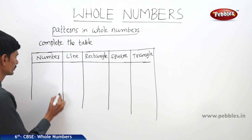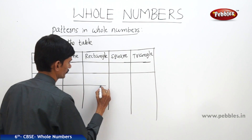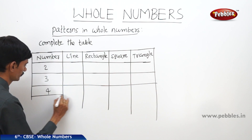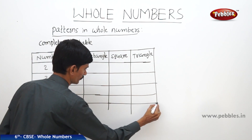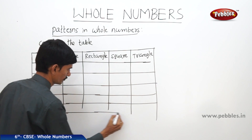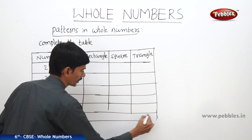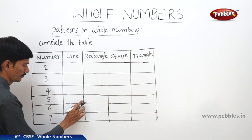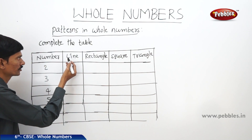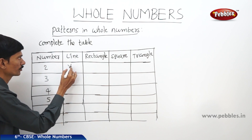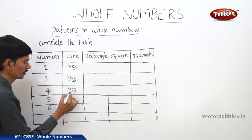Here we take different numbers such as 2, 3, 4, 5, 6, 7, and so on. We can take any number. Now we know that every number can be shown as the geometrical shape of a line made up of dots. So 2 can be shown as a line, and 3 also can be shown as a line. So every number can be shown as a line, and we write yes in the line column.